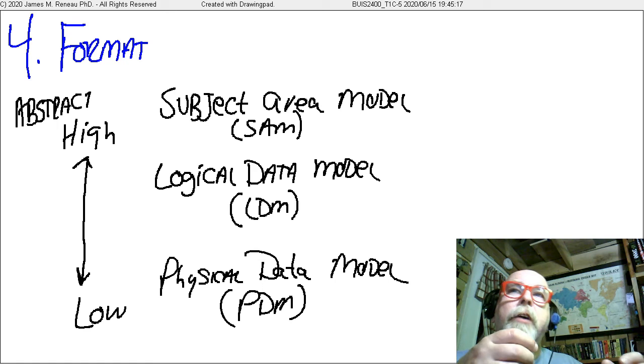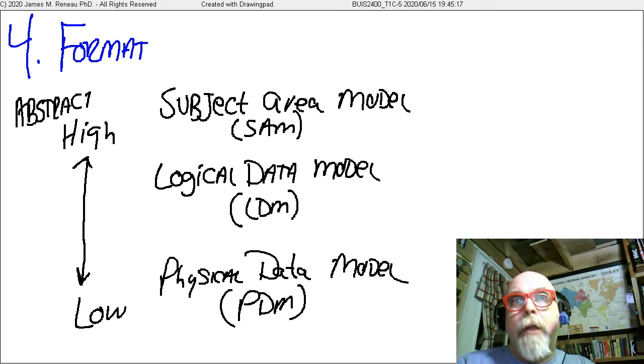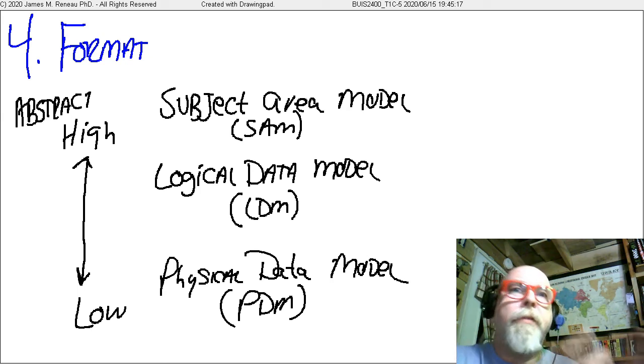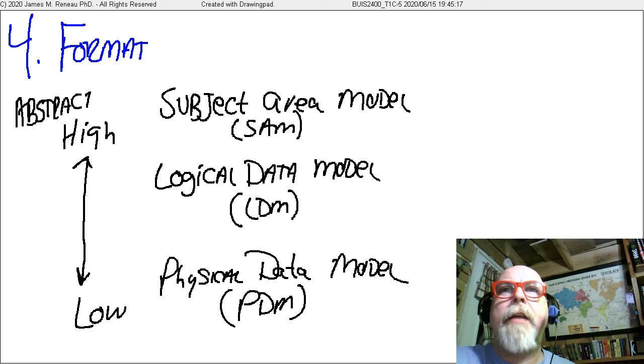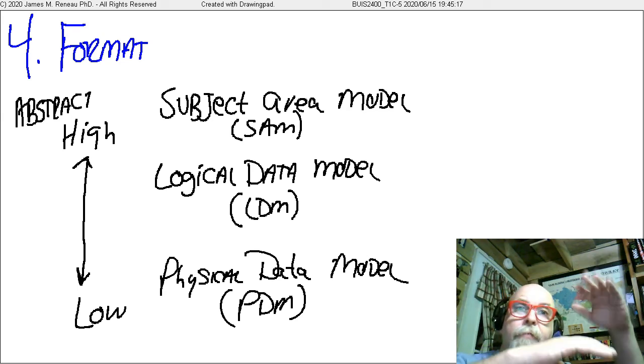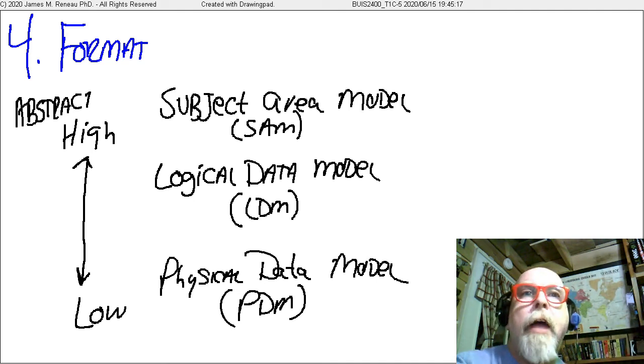They each have a different temporal nature. They each have a different function. Because the model we're going to put in a wind tunnel isn't the same model we're going to put on the desk of the CEO to show off what it looks like. And the fourth type of what is found in a data model is the format of the data model. And the formats of the data model follow, from abstract, highly abstract, to lowly abstract. And the high abstract model would be called the subject area model. And it's called the SAM.